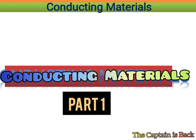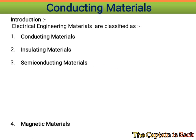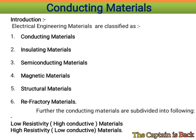Conducting materials, part one. All electrical engineering materials are classified into conducting materials, insulating materials, semiconducting materials, magnetic materials, structural materials, and refractory materials. Further, the conducting materials are subdivided into low resistivity and high resistivity.